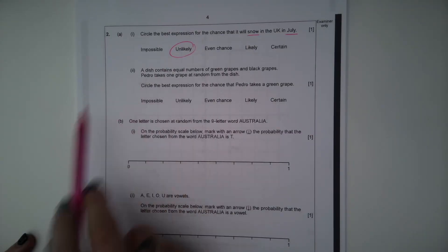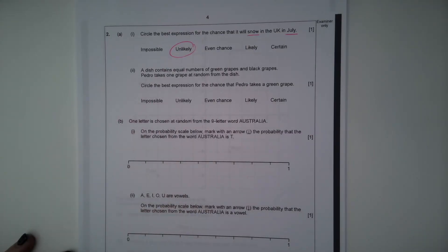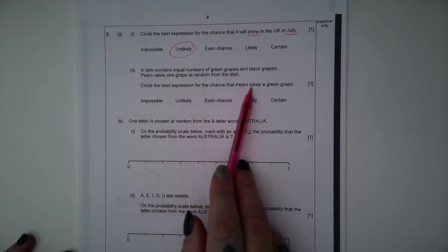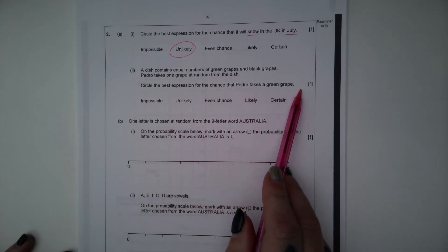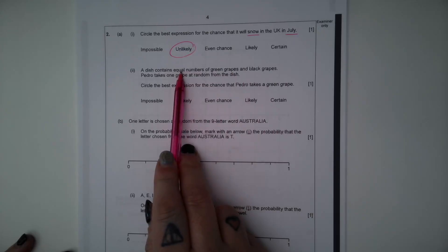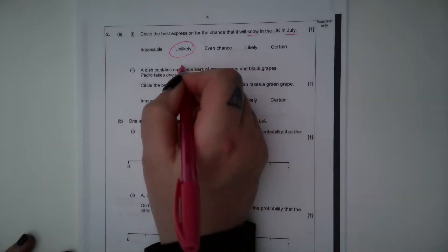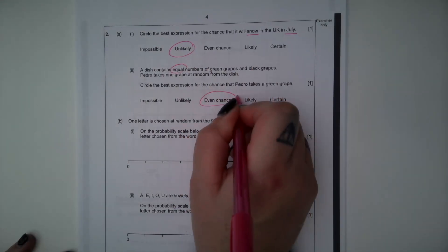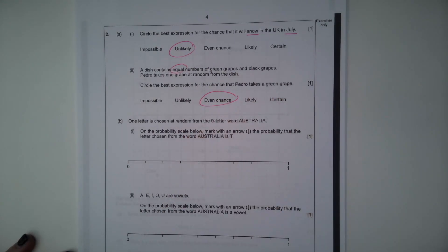Part 2. A dish contains equal numbers of green grapes and black grapes. Pedro takes one grape at random from the dish. Circle the best expression for the chance that Pedro takes a green grape. So there's equal numbers of green and equal numbers of black, so that's important. If there's an equal number of each, then there must be an even chance of picking out a black or a green grape.